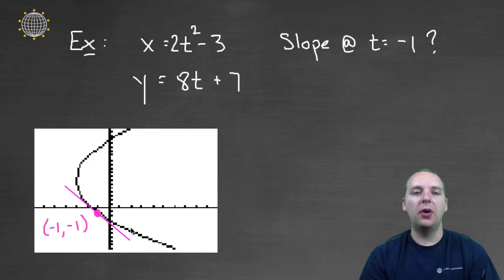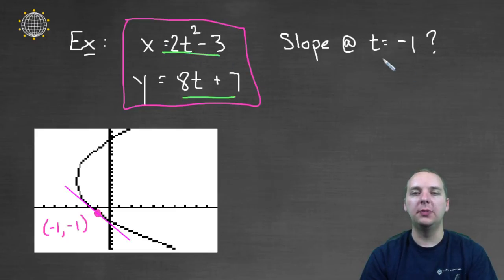So what I've done here is I've drawn the parametric curve. The black line is representing this set of parametric equations, and when t is negative 1, you would be at the point negative 1, negative 1. Just plug in negative 1 for t and you would be right here. So I want the slope of this pink line right here.